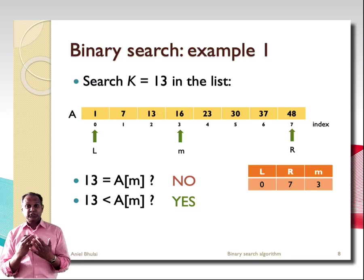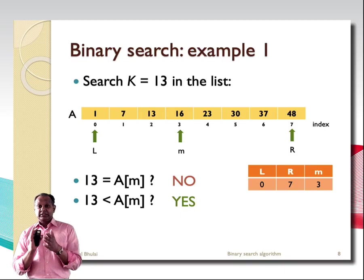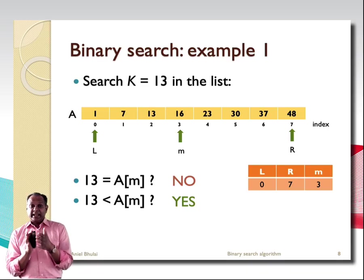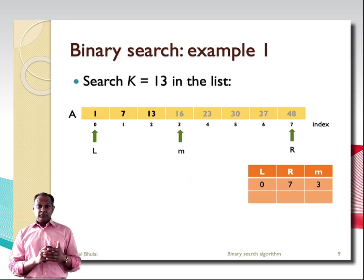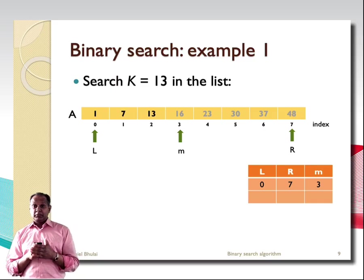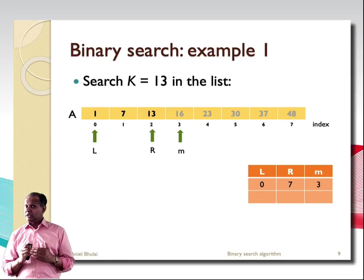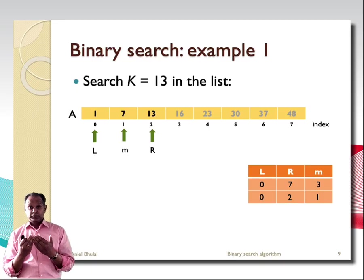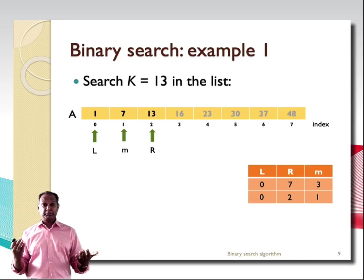Now let's consider the left half. The variable L points at 0 and R moves to position 2, which is M minus 1. The new middle element is at position 1, because floor of (0 + 2) / 2 = 1. The whole cycle is repeated recursively. For this iteration we again have three cases: is 13 equal to, less than, or greater than the element at position M?